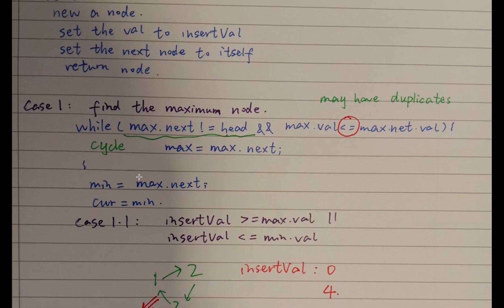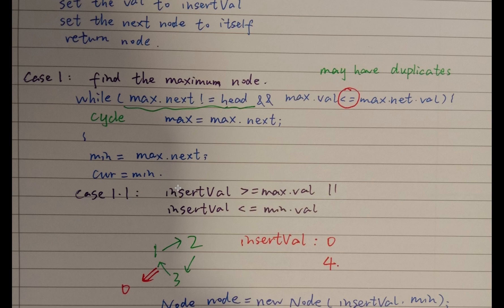Another common case is that we are given a sorted list and we need to find the suitable position to insert the value. Our algorithm is to first find the maximum node. Once we have the maximum node, we know its next node is the minimum node. Then we can do a simple iteration to find the suitable position.